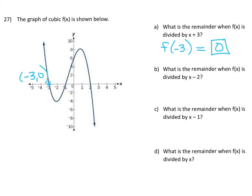Part B asks: what is the remainder when f(x) is divided by x minus 2? We're looking for f(2), the positive value. Going to the graph at x = 2, the coordinates of that point are (2, 0). So f(2) = 0, and our remainder is 0. The remainder is what the function equals at that x-value, so at x = 2, the function equals 0.